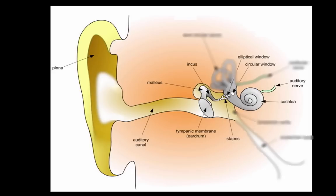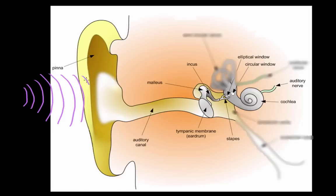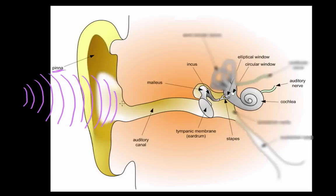Here we have a diagram of the ear. Sound waves come in and travel through the air towards your head. The very first thing they hit is the outer visible part of the ear — this is what you see when you look at someone's ear. This outer visible part is known as the pinna, and it funnels the sound waves down into a smaller structure known as the auditory canal.